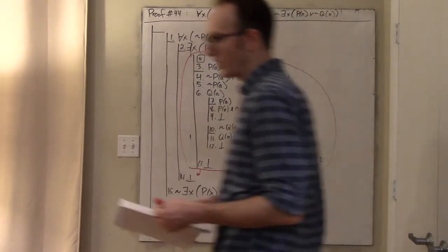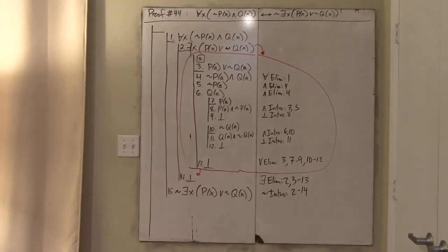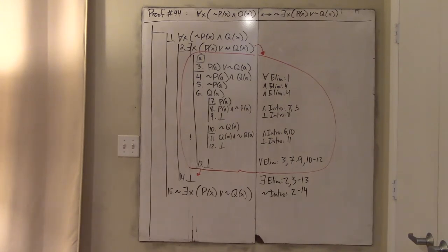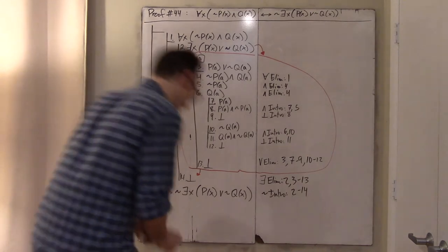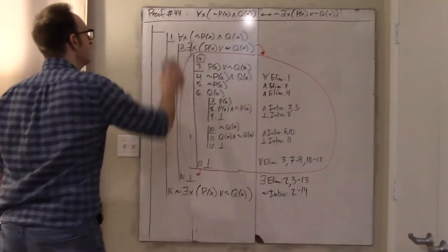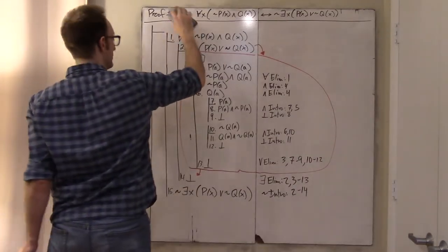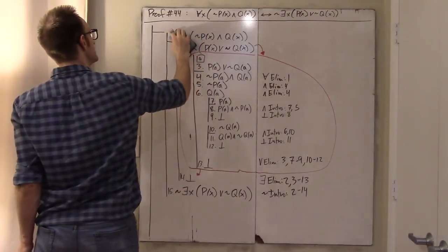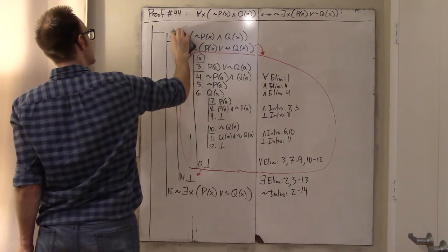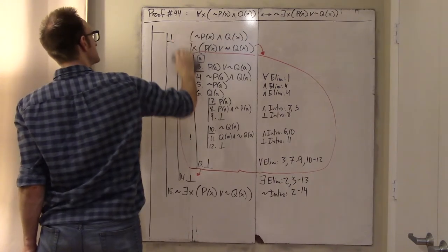That was relatively straightforward — the easy half of the proof. I'll pause, erase the whole thing, and then we'll do the converse direction, which I think is more difficult. That was line fifteen, so now I'm going to start with line sixteen.